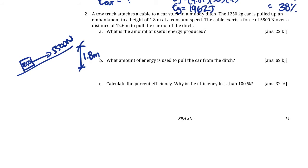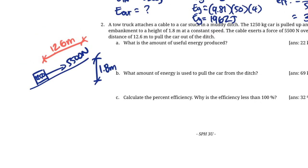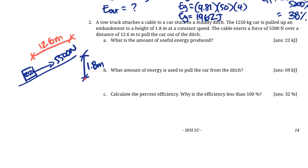You might be thinking, how's that different from the 1.8? The distance is the actual distance the box traveled. You can think of this as work. Ideally, we're just lifting a box straight up 1.8 meters. But realistically, we have to pull it this whole 12.6 meters along the ground. So there's going to be some energy that's lost.